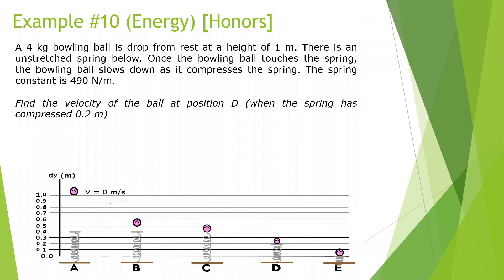A 4 kg bowling ball is dropped from rest at a height of 1 meter. There is an unstretched spring below. Once the bowling ball touches the spring, it slows down as it compresses the spring. The spring constant is 490 newtons per meter. Find the velocity of the ball at position D. The lowest point — position D — is 0.8 meters from the start, and that becomes the zero line.